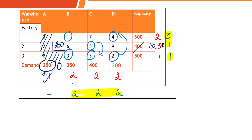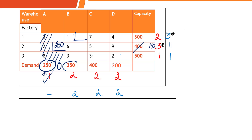The maximum penalty in this iteration is 3, from the first row. The least cost in that row is 1. Demand for that warehouse is 350, capacity available is 300. Since capacity is the minimum, allocate 300. Factory 1's capacity is now exhausted, and the remaining demand at that warehouse is 350 minus 300 = 50.